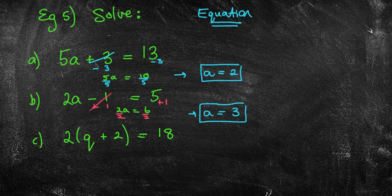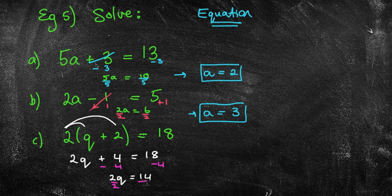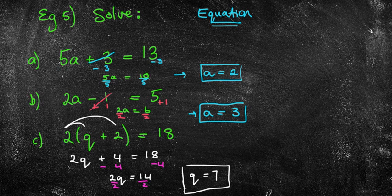The last equation is more challenging as it includes expanding brackets first. 2(q + 2) = 18 expands to 2q + 4 = 18. Subtract 4 from both sides to get 2q = 14, then divide both sides by 2, giving q = 7.